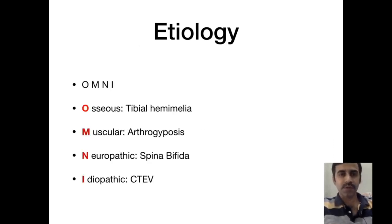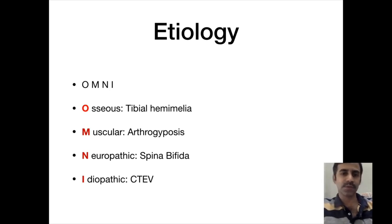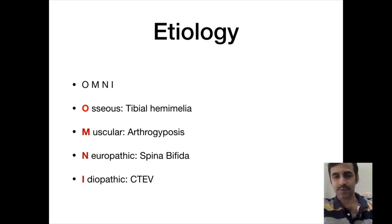The etiology can be summarized into a mnemonic OMNI: O means osseous, M means muscular, N means neuropathic, I means idiopathic. The osseous cause is tibial hemimelia; muscular is arthrogryposis; neuropathic is spina bifida; and idiopathic is congenital talipes equinovarus deformity. CTEV is the most common cause of club foot.